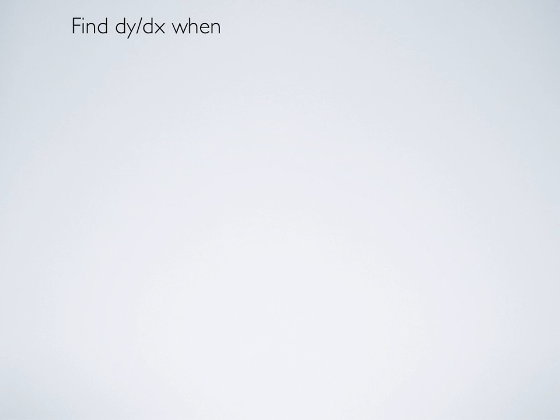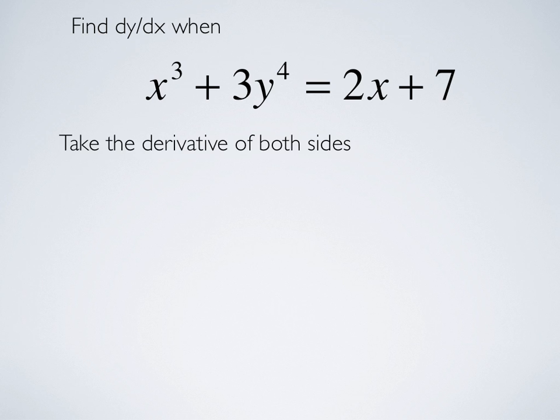So, let's try another example, a similar one. Find dy dx when x cubed plus 3y to the fourth equals 2x plus 7. So, we're going to step through, taking the derivative of each term, and use the chain rule whenever we encounter an expression containing y.